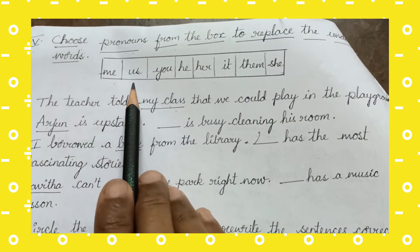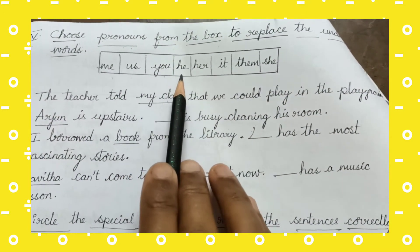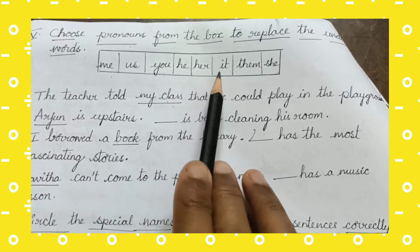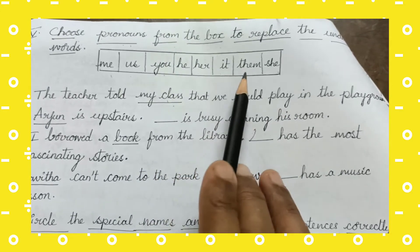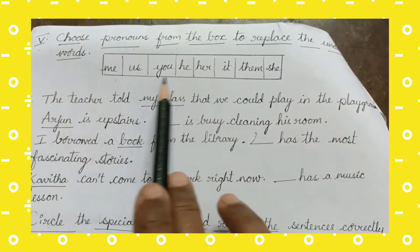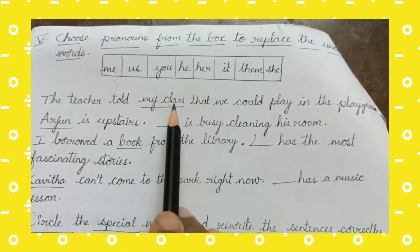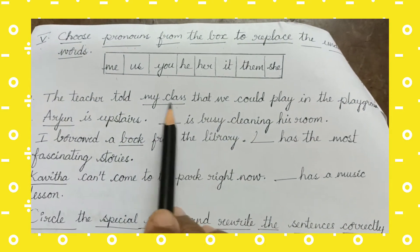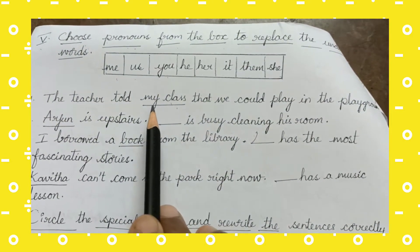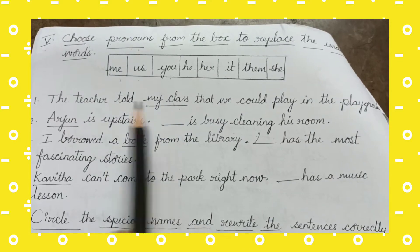The pronouns given in the box are: me, you, he, her, it, them, she. These are the pronouns. You have to replace the underlined word with whichever pronoun suits it.